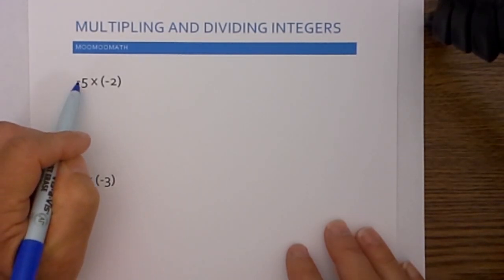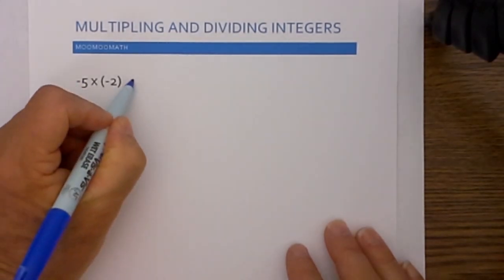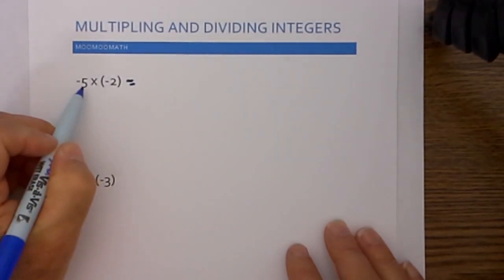If the two signs are the same, negative and negative or positive and positive, then the answer is positive. If the sign is a positive and negative, the answer is negative. So in this first example,